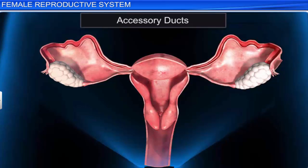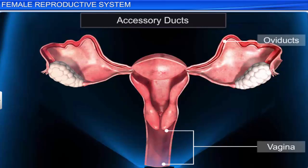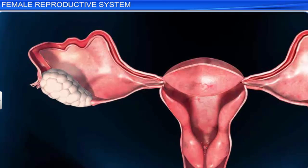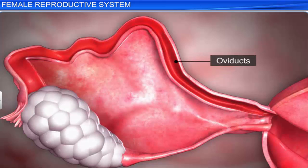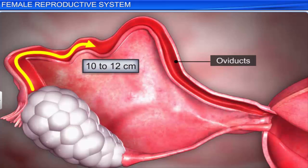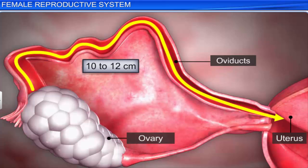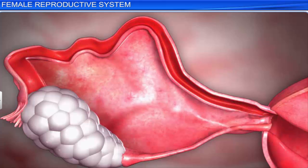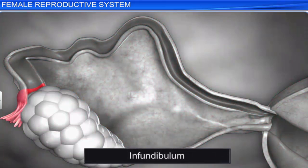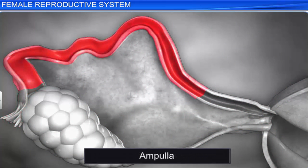The accessory ducts of the female reproductive system are the vagina, oviducts, and the uterus. The pair of oviducts, or fallopian tubes, is about 10 to 12 centimeters long, and extends from the periphery of each ovary to the uterus. Each oviduct is differentiated into 3 parts, namely the infundibulum, ampulla, and isthmus.